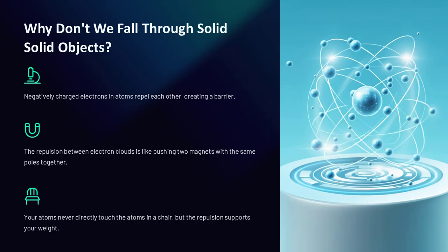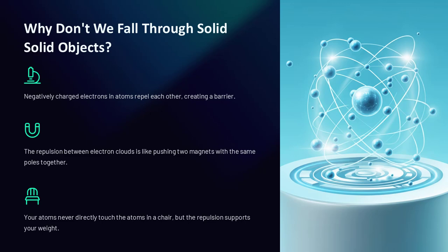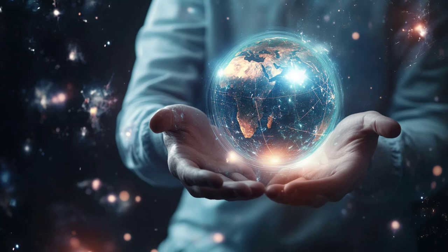If atoms are mostly empty, why don't we pass through solid objects? The answer lies in the electromagnetic force. The negatively charged electrons in the atoms of your hand repel the negatively charged electrons in the atoms of the object you touch. This repulsion creates a barrier that prevents the atoms from physically touching, giving rise to the sensation of solidity.